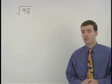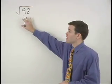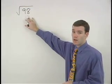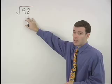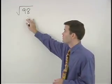To simplify a square root where the number inside the radical is not a perfect square like the square root of 98, we start by making a factor tree for the number inside.